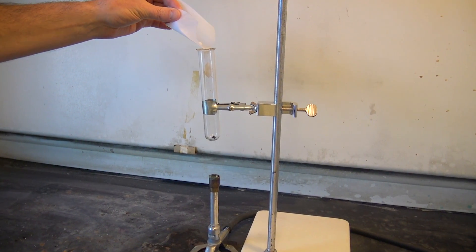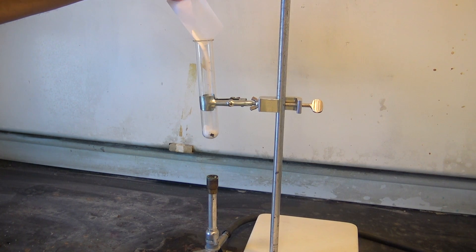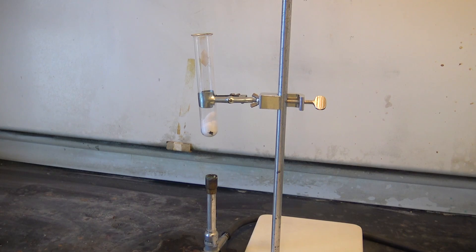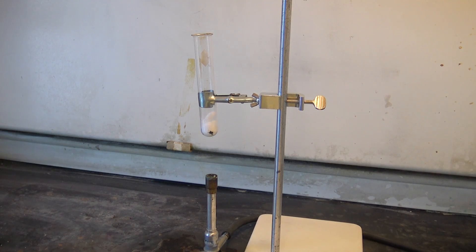We're going to add our 10 grams of sodium chlorate to the test tube and we're going to heat it up. Now the sodium chlorate acts as an oxidizer. It's going to provide oxygen to this reaction.